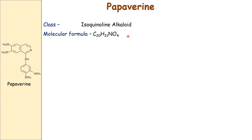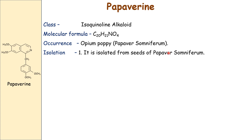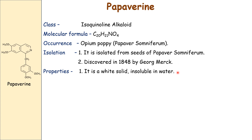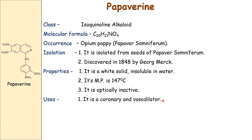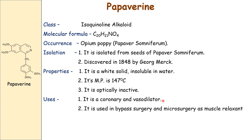Its molecular formula is C20H21NO4. It occurs in the plant opium poppy, i.e. Papaver somniferum. It is isolated from seeds of Papaver somniferum and was discovered in 1848 by George Merck. Properties: it is a white solid, insoluble in water, with a melting point of 147 degrees Celsius. The compound is optically inactive. Its usage: it is a coronary vasodilator, used in bypass surgery and microsurgery as a muscle relaxant.